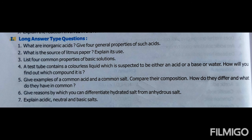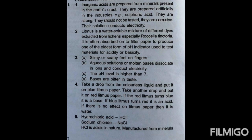Question number 4: if a test tube contains a colorless liquid suspected to be either an acid or a base, how do we test it? For this activity, we need a dropper, red litmus paper, and blue litmus paper. We take the liquid from the test tube into the dropper, and we apply it drop by drop.